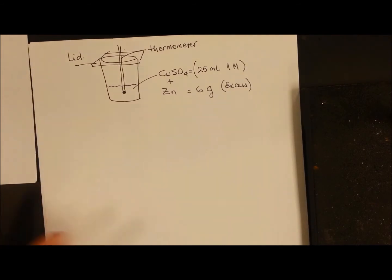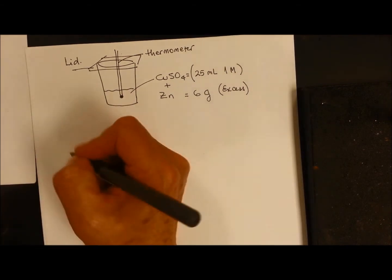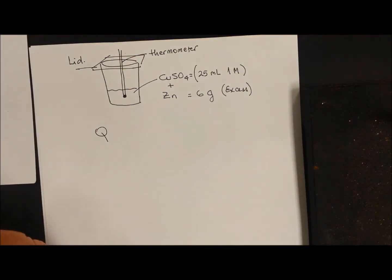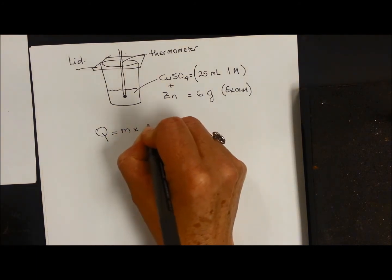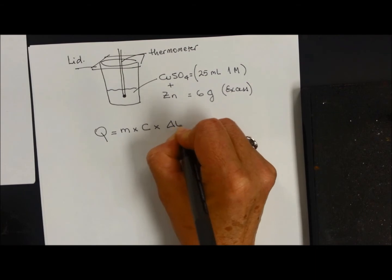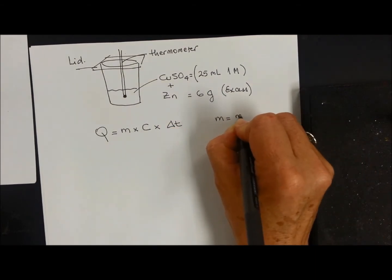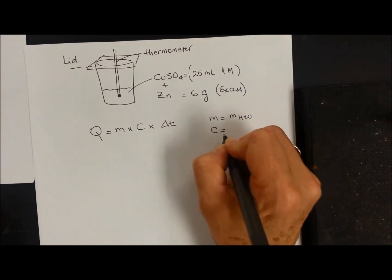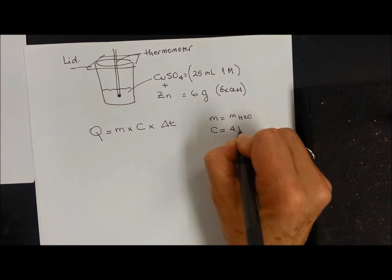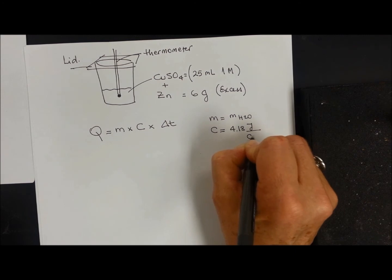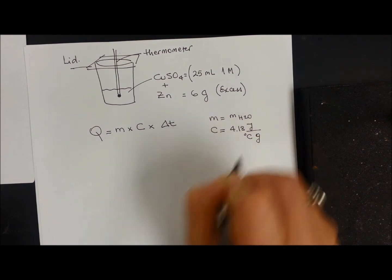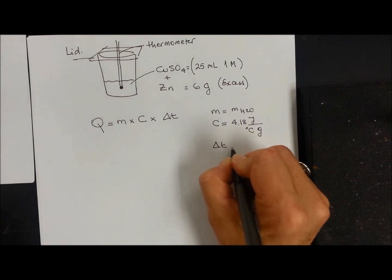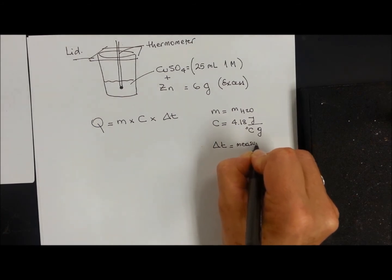The calculation of the amount of heat absorbed by the water can be done through the equation of thermodynamics that says that the amount of heat Q is equal to the mass times the specific heat times the delta T, where the mass is going to be the mass of water. The C is the specific heat of water, in this case is 4.18 joules over Celsius gram. And delta T is the delta T that we measure in the experiment.